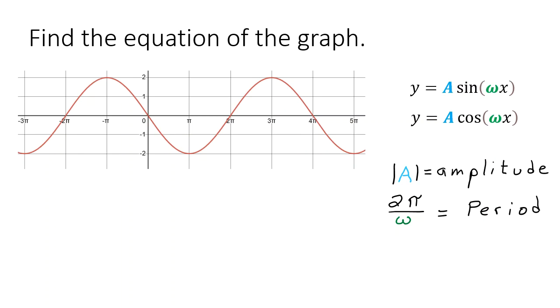In these examples we're given some graphs and we have to figure out the equation of the graph. And these particular examples are going to be either sine or cosine and they're only going to be affected by an amplitude change signified by the variable a or a period change signified by the variable omega here in the equation.